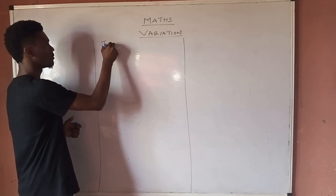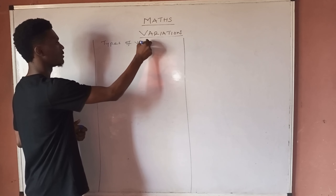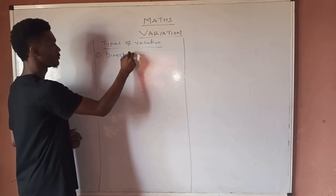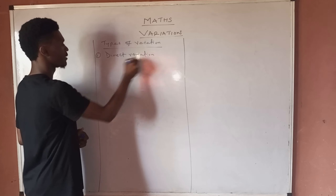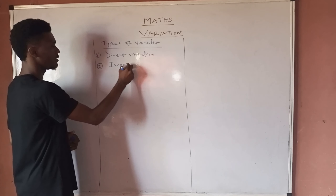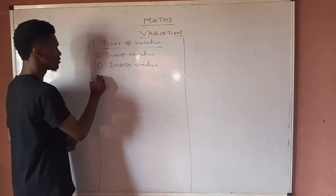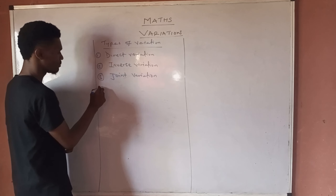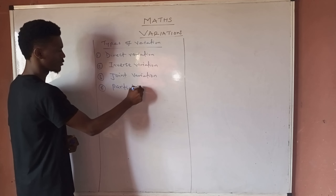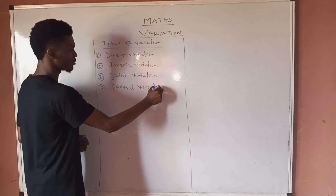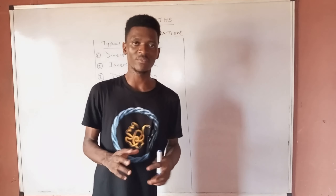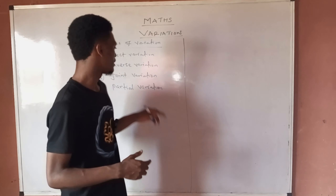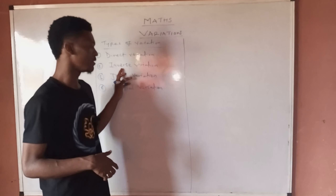What are the types of Variation? In Mathematics we have four types: number one, Direct Variation; number two, Inverse Variation; number three, Joint Variation; and number four, Partial Variation. This class is split into two videos. In this first video we'll be looking at Direct and Inverse Variation. In the second video we'll consider Joint and Partial Variation.